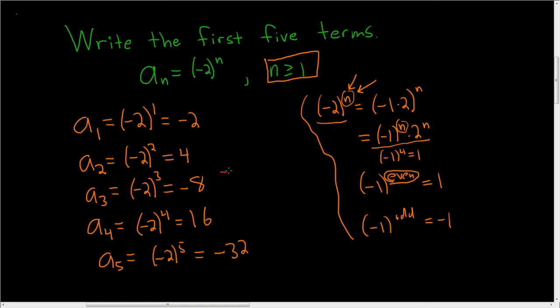So the final answer is negative 2, 4, negative 8, 16, and negative 32. Those are the first five terms of the sequence.